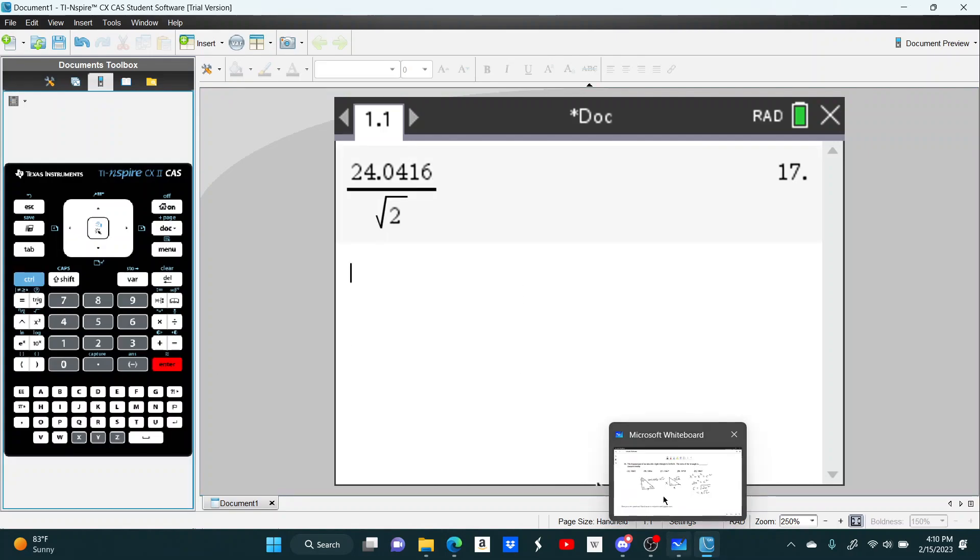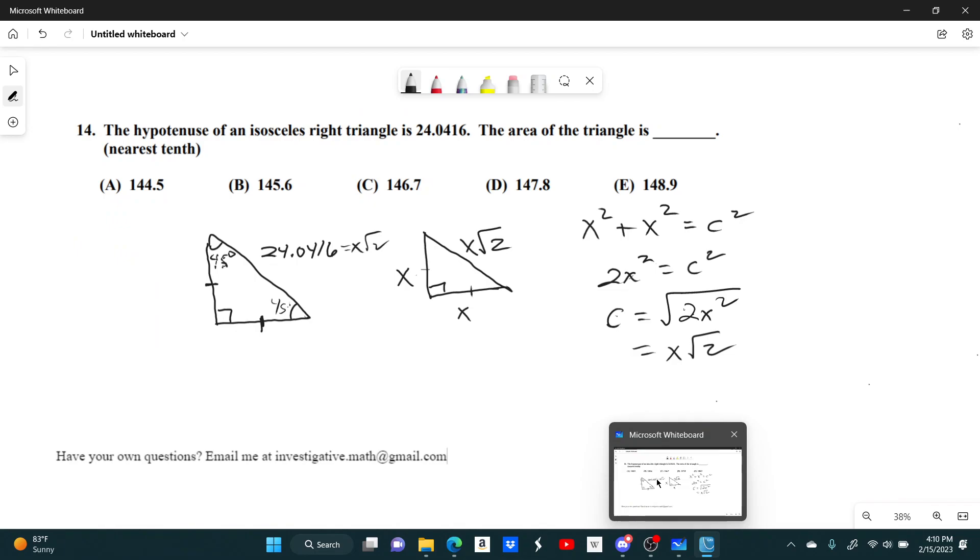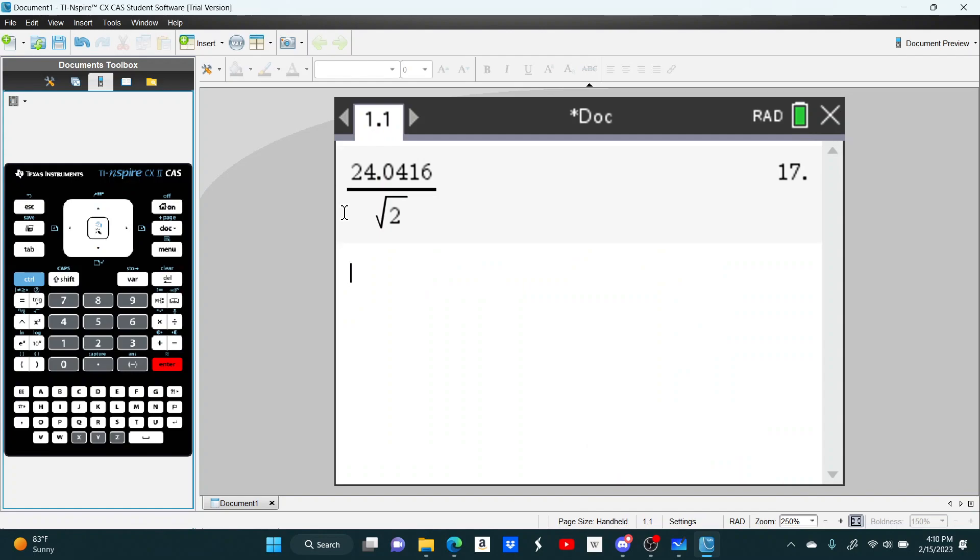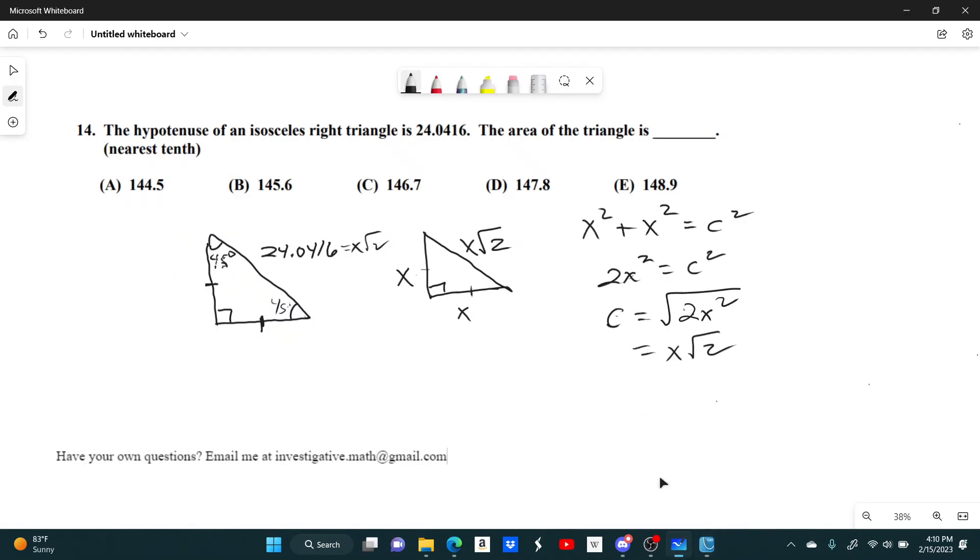There's a side length of 17, and you want the area. The area is just base times height over 2. The base and the height are the same, so it will be 17 times 17, then divide by 2. Which gives us an area of 144.5, which is answer choice A.